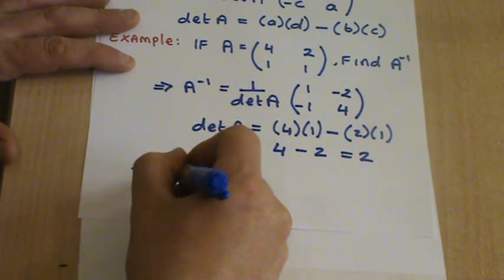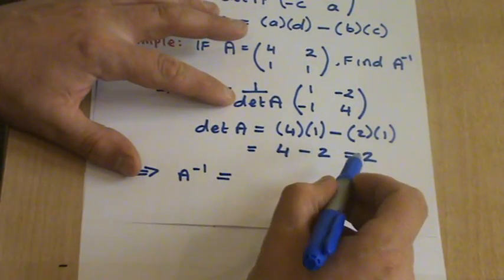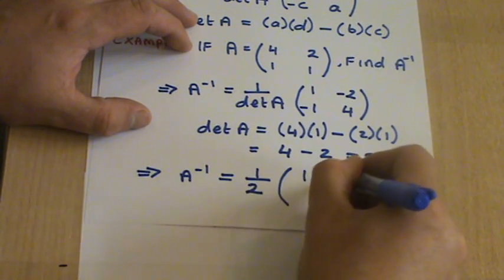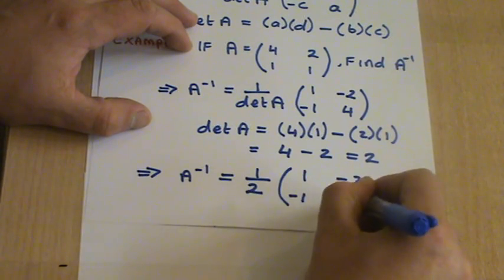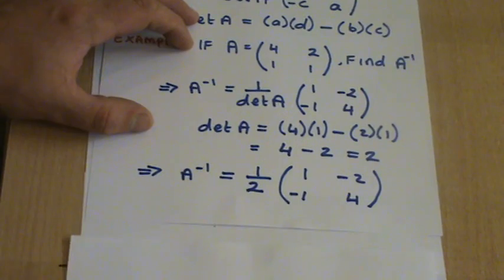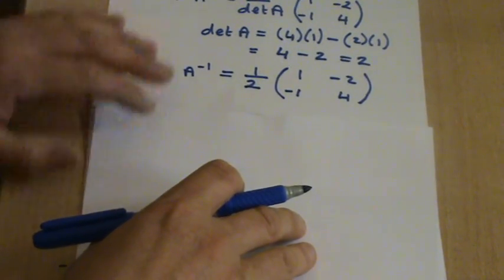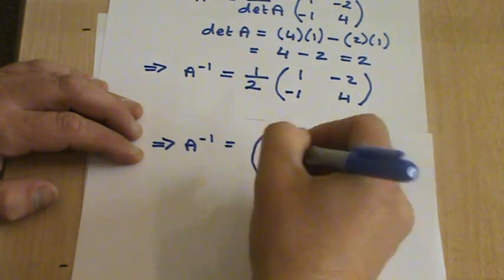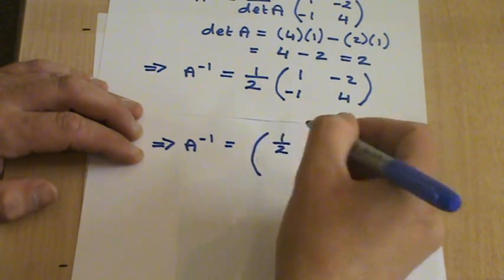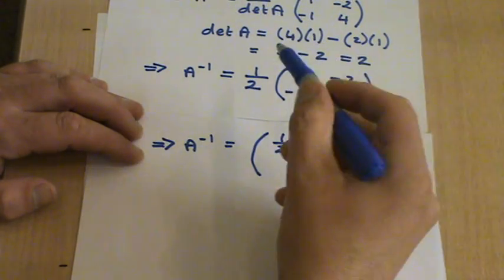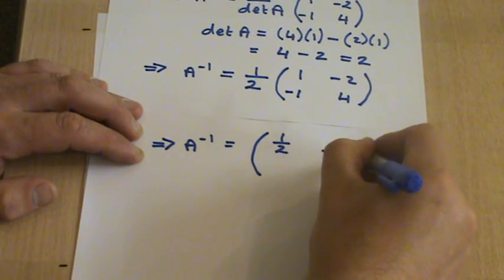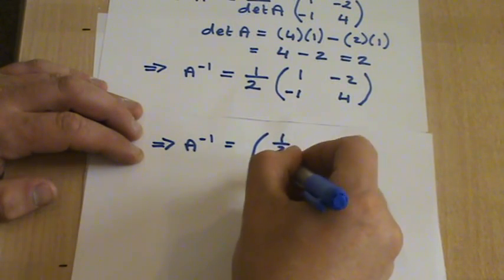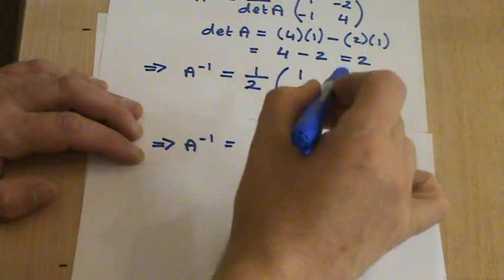So this implies then we can write A inverse as 1 over the determinant of A, which is 2. So we can write that as 1 over 2 times the matrix 1, minus 2, minus 1, 4. Now the next step then is to just multiply in by the half. So this implies then A inverse is going to equal: a half times 1 is a half, a half of minus 2 is minus 1, a half of minus 1 is minus a half, and finally a half of 4 gives you 2. Hence we've calculated the inverse of the matrix A.